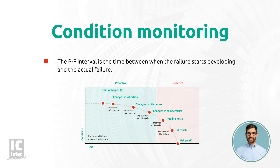This graph gives a visual overview of machine changes and when these can be detected during the development of the failure. If we look at this graph, we see that changes in vibrations are measured relatively fast after the failure starts developing.